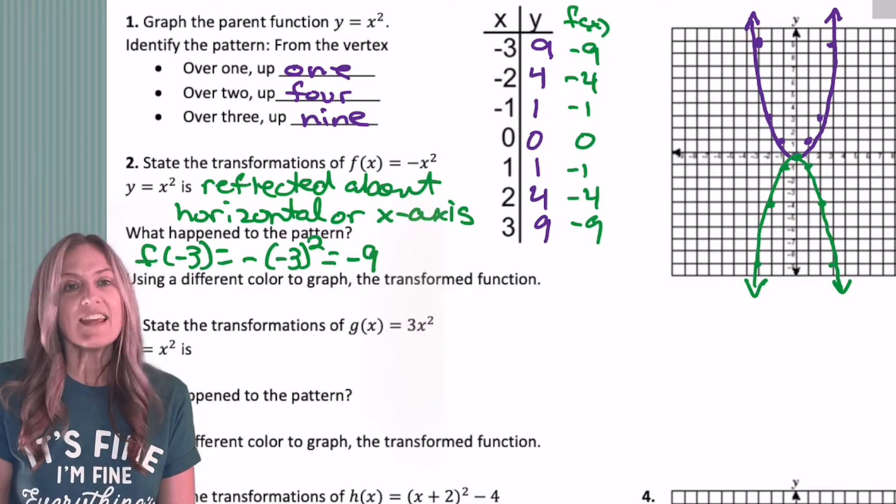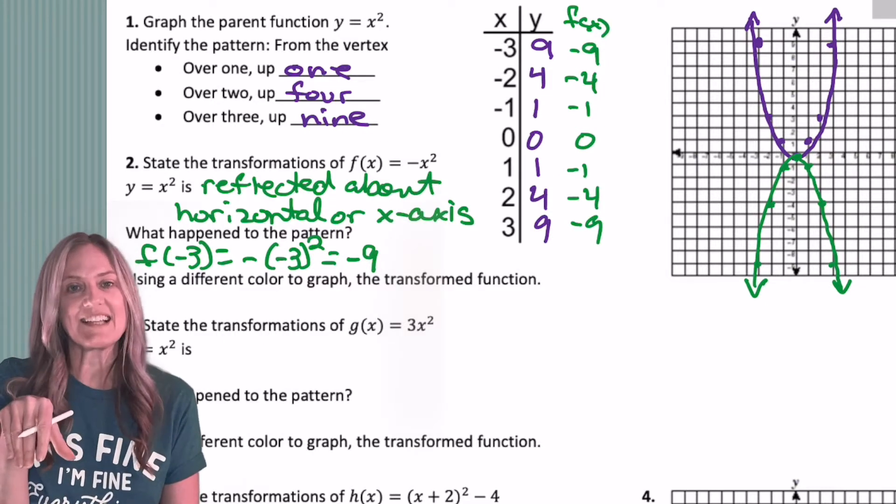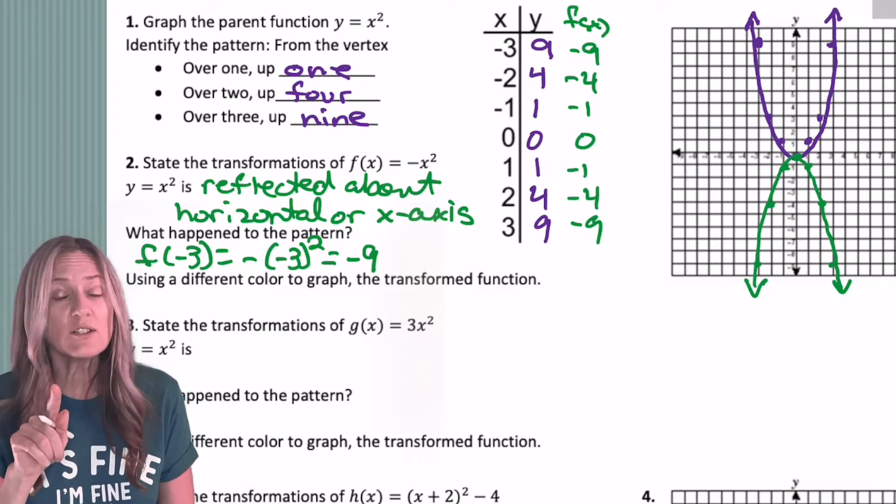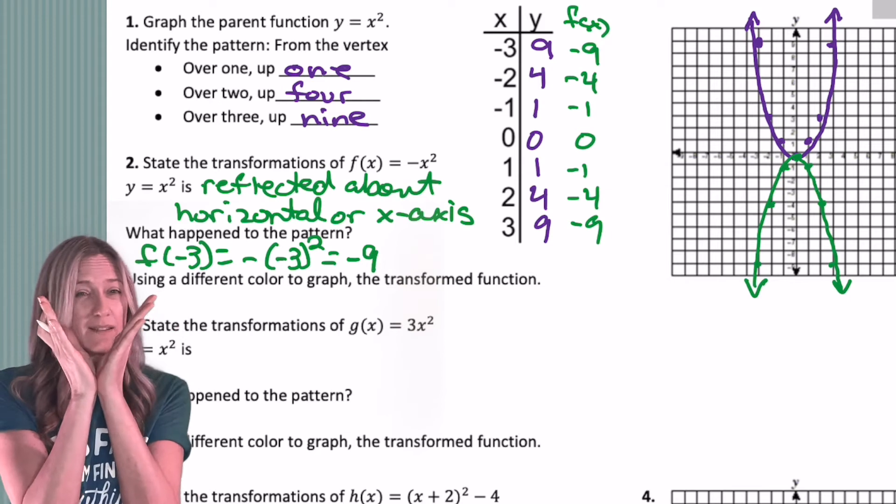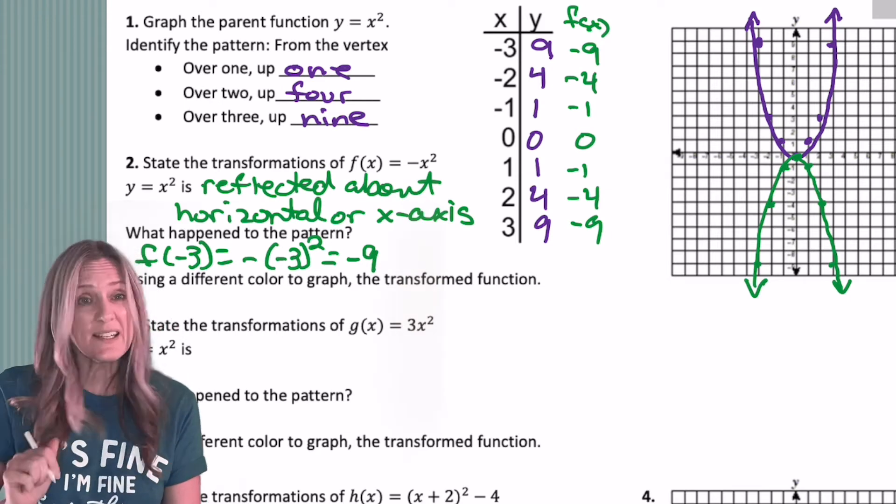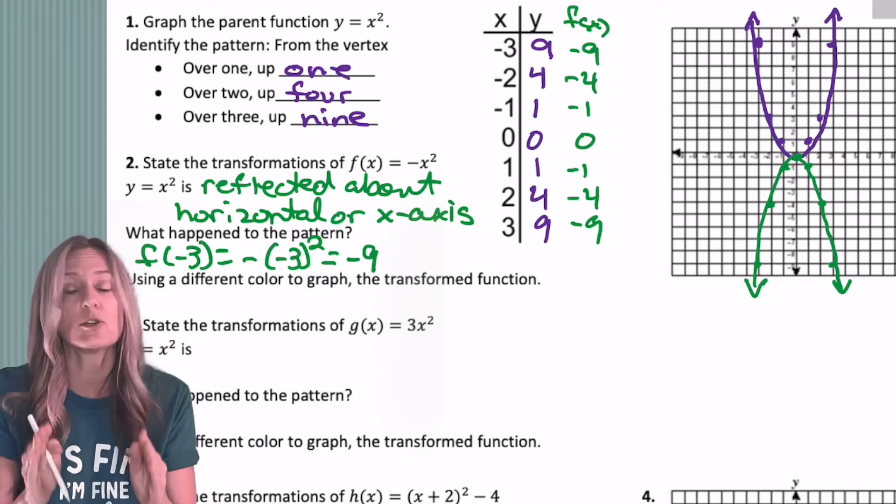So let's graph the transform function. We can see easily that our parent function has been reflected about the x-axis. Now I want you to pause for a second and look back at your graph. Does it look like you did straight segments? Does your graph look like an absolute value graph? If it does, erase it now and get some curve into that parabola. It cannot look like a v.